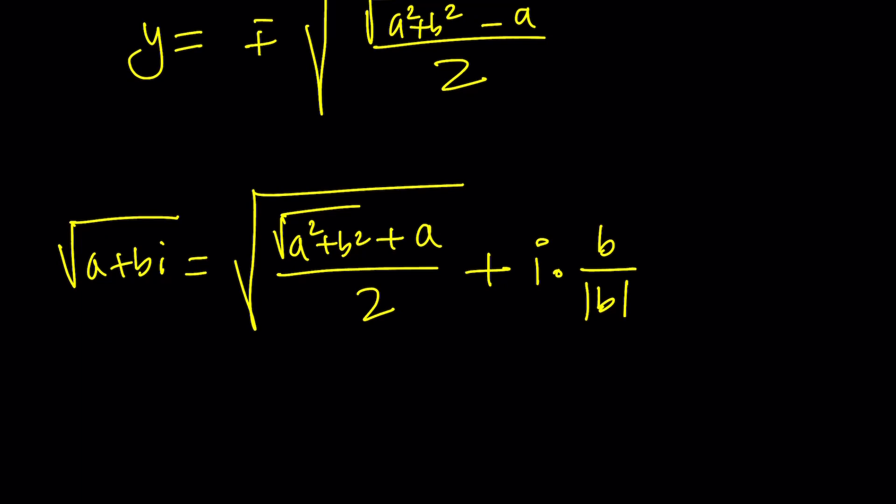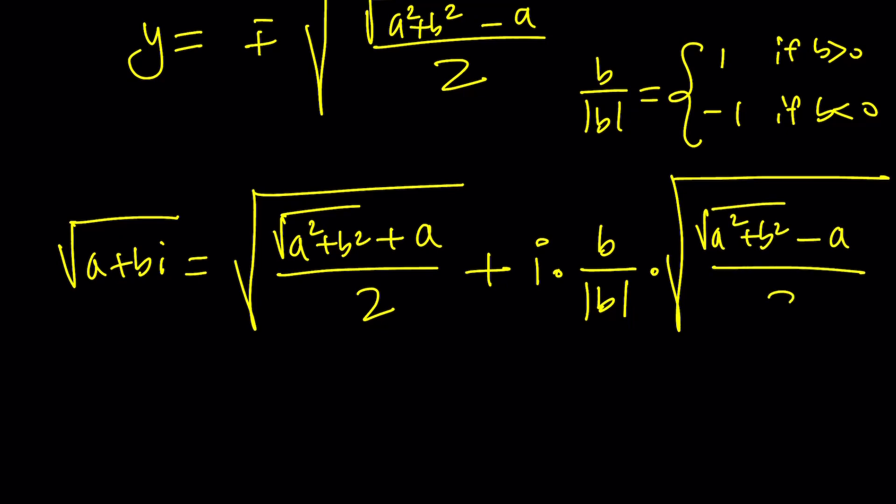I can multiply the i by a very special function, b divided by absolute value of b. By the way, b divided by absolute value of b can be written as a piecewise defined function. It's equal to 1 if b is positive, equal to negative 1 if b is negative. Obviously you don't want b to be 0 because if b is 0 then you get a real number and you can square root that. You don't really need a formula because this formula is just too complex. And this is going to be multiplied by the square root of the conjugate, which is the same thing with the minus sign. And that's pretty much it.